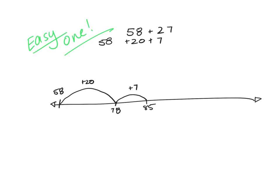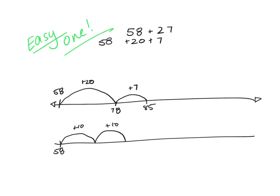If you find it difficult to add 20 and then 7, you can partition further. Starting at 58, instead of adding 20 at once, you can go 10 plus 10, landing first on 68, then 78. You can then break the 7 into individual 1s: 79, 80, 81, 82, 83, 84, 85. That's 7 jumps of plus 1.